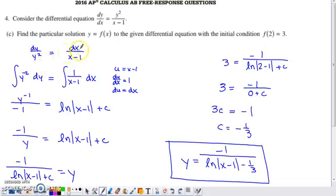When you separate your variables, you can use Leibniz notation here and kind of treat this algebraically. Multiply the right-hand side by dx, divide the left-hand side by y squared.